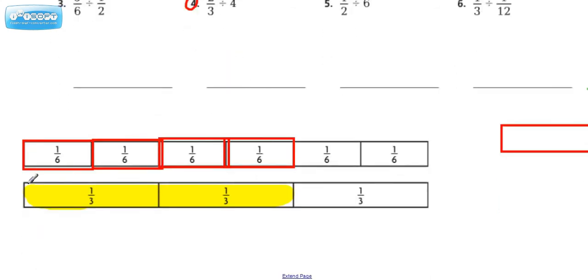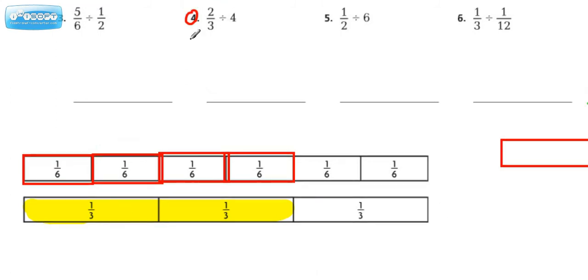So what I've done here is I've taken a fraction strip. The whole thing would be equal to 1. I've highlighted 2 thirds because that's what the dividend is. Now they're asking us to break that up into groups where there's 4 of them. So let's take a look at what that would look like.